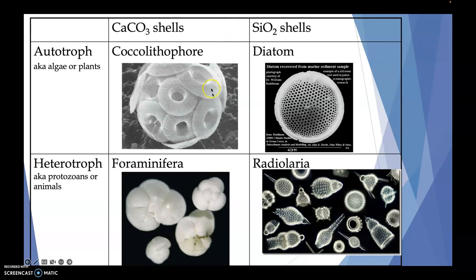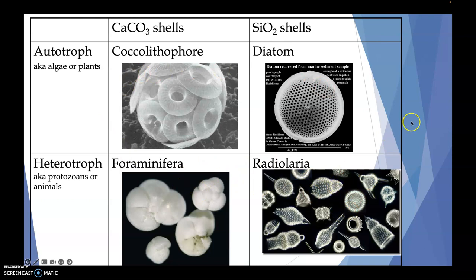We can also break plankton down by chemical composition. CaCO3 — calcium carbonate shells — versus silicon shells. Calcium is good for bones, just like we need calcium for our bones to grow big and strong. Silicon is a little different — one analogy is that breast implants are made out of silicon. So when we break down these different sediments, we can ask: are they made out of calcium carbonate or silicon, and are they from an organism that makes its own food or one that has to forage for food?